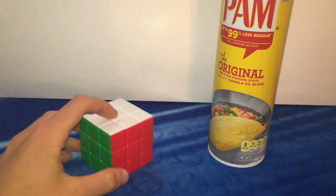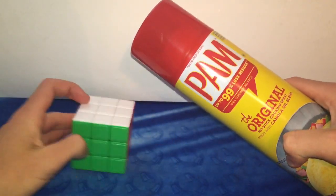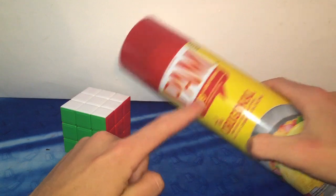So if you don't know how this series works, I take this crappy Dienchain stickerless 3x3 and I lube it with random substances. In this case, I'll be lubing it with Pam.